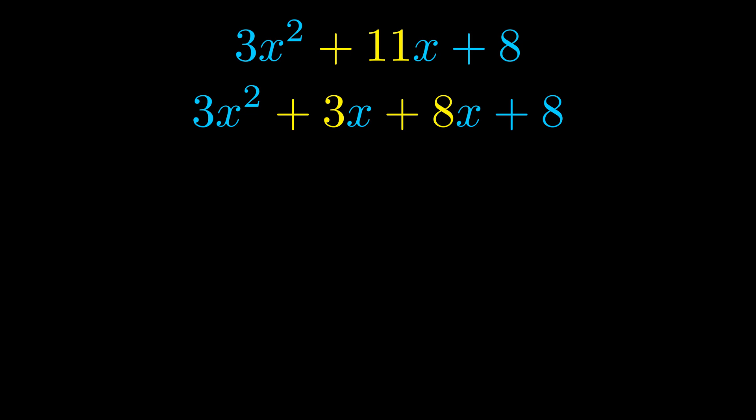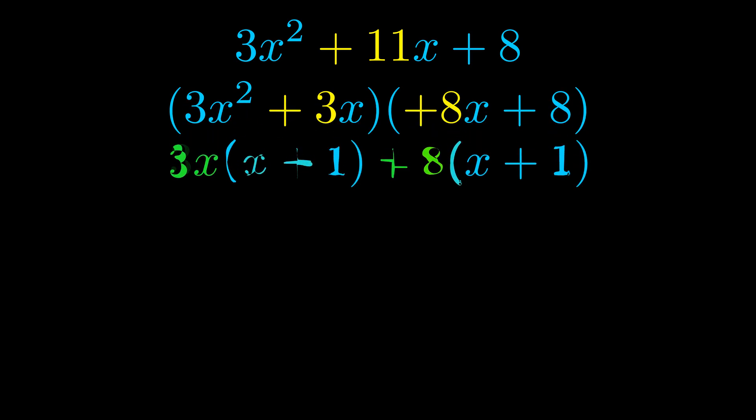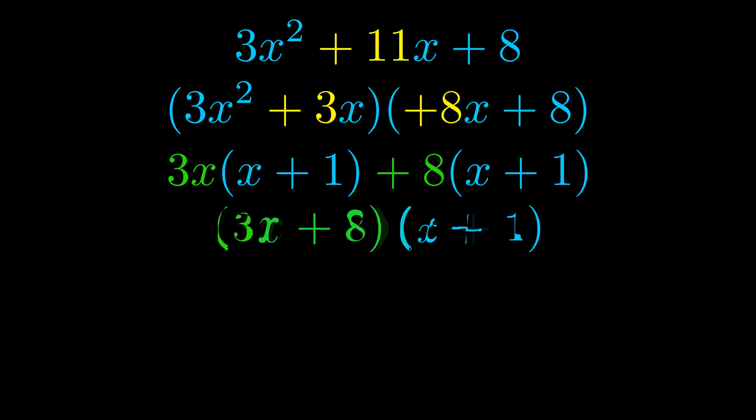Once we've done this, we go ahead and put parentheses around the first term and the last term. And we do that so that we can take the greatest common factor out of both terms. We can see the greatest common factor is now outside in green. Notice also how what remains inside of the parentheses is the same in both cases. The blue values are the same.